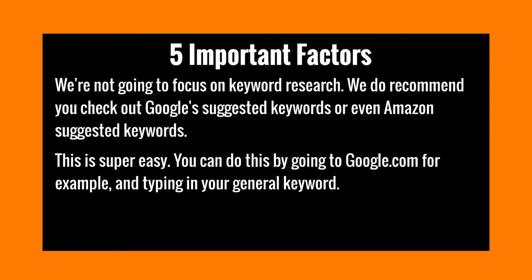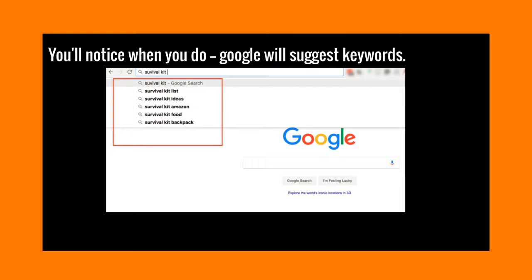Here's what I want you to do: go to google.com and type in a general keyword. You'll notice that Google will suggest keywords in a dropdown. In order for keywords to appear in that suggested box, it means there's a ton of people searching for those keywords — a high volume of searches. For example, when I typed in 'survival kit,' a dropdown appeared with Google suggested keywords like survival kit list, ideas, Amazon, food, and backpack.